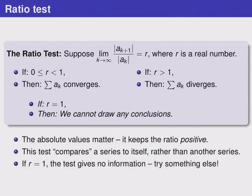Finally, the ratio test is like a limit comparison test where we compare a series to itself. We calculate the limit as k goes to infinity of the absolute value of the (k+1)th term in a series divided by the kth term in a series, also with absolute values. If this comes out to a real number called r, then one of three things can happen. If this number is between 0 and 1, including 0 but not including 1, then the series converges. If the number is bigger than 1, then the series diverges. And finally, if the number is equal to 1, we cannot draw any conclusions. We have to find a different test to tell us what happens.